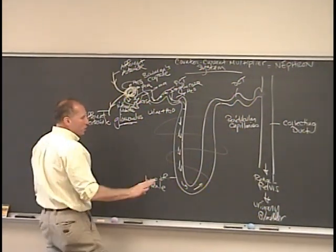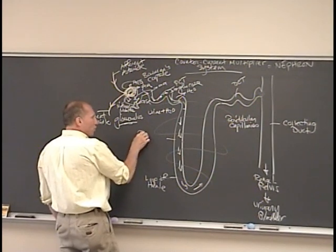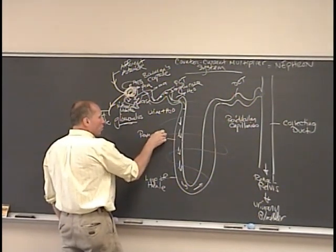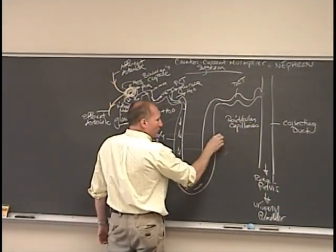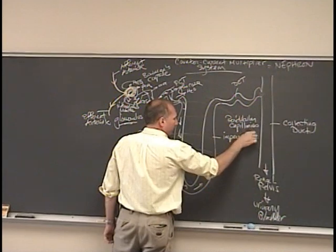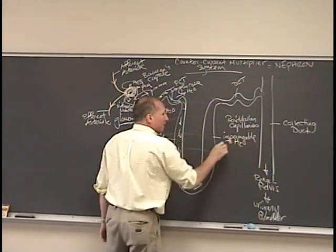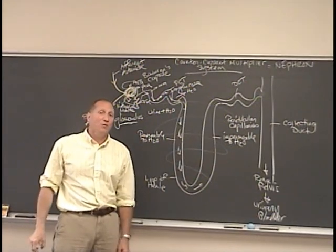Now, it's important to note that the descending loop of the loop of Henle, those walls are permeable to water. Whereas the ascending loop of the loop of Henle are impermeable to water. That's an important concept known only within the loop of Henle.